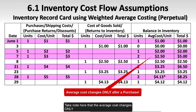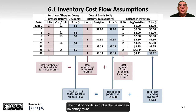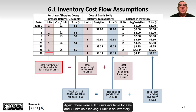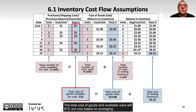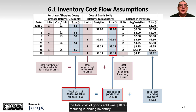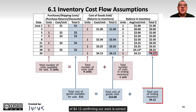Note that the average cost changes only when there is a purchase, and never when there is a sale. The cost of goods sold plus the balance in inventory must equal the cost of goods available for sale. Again, there were 5 units available for sale and 4 units sold, leaving 1 unit in ending inventory. The total cost of goods available was $15, but based on averaging, the total cost of goods sold was $10.88, resulting in ending inventory of $4.12, confirming our work is correct.